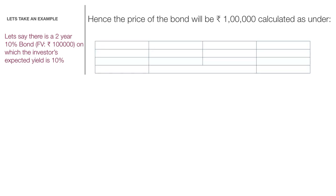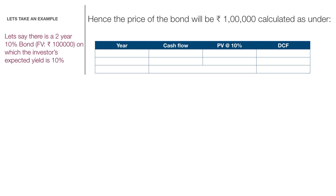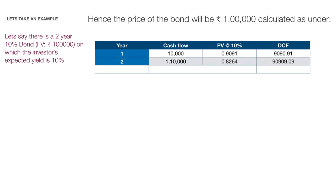Let's construct a table showing the cash flows. You have the first column for year, the second column for cash flow, the third column for the present value factor at 10% discounting rate, and the fourth column for discounted cash flow. For the first year, the investor gets a cash flow of 10,000 rupees as coupon, discounted using the PV factor at 10% for 1 year. In the second year, the cash flow is 1,10,000 — comprising the second-year coupon of 10,000 rupees and the principal repayment of 1 lakh — discounted using the PV factor at 10% for two years.